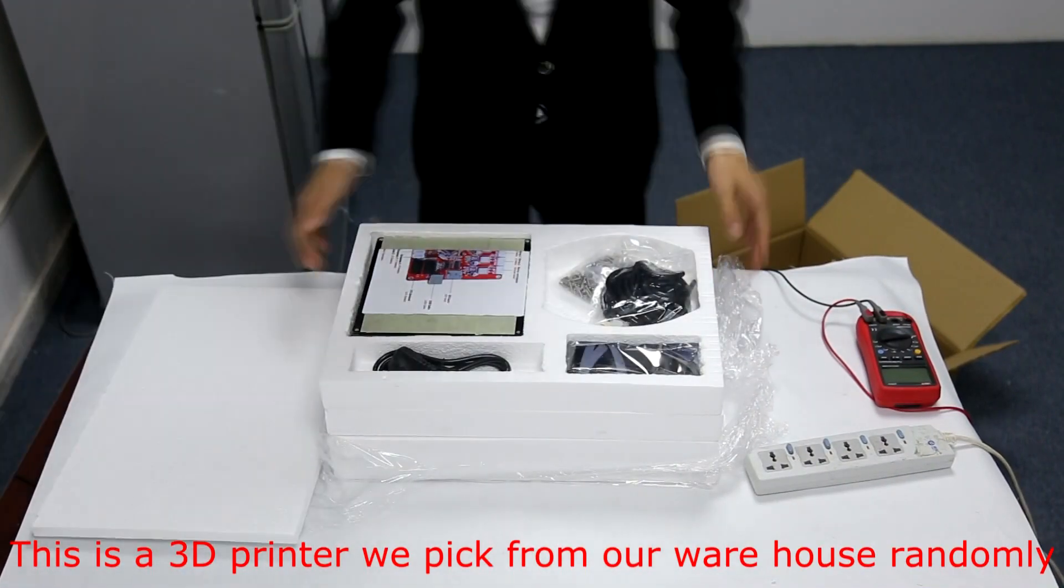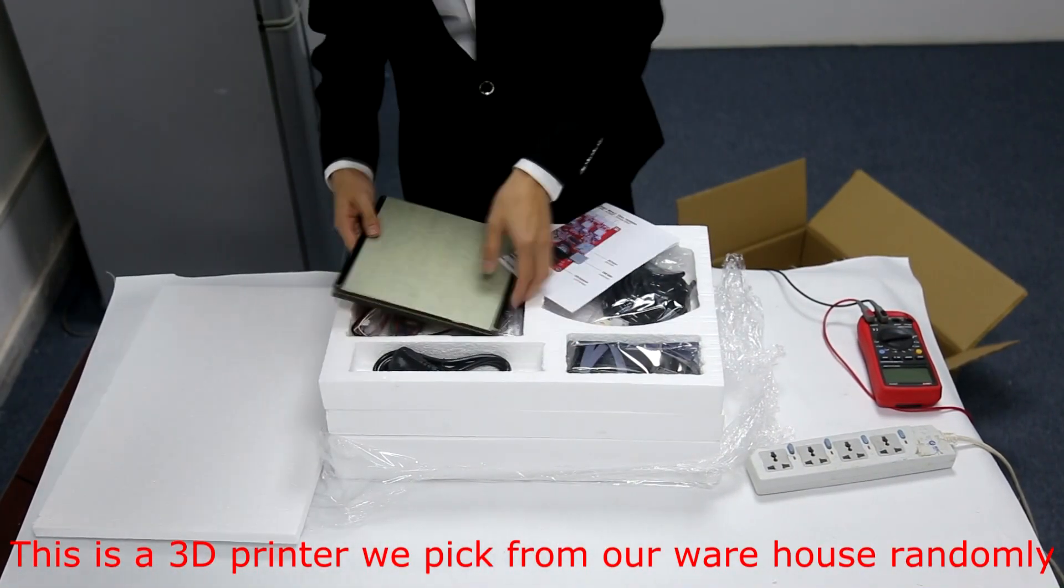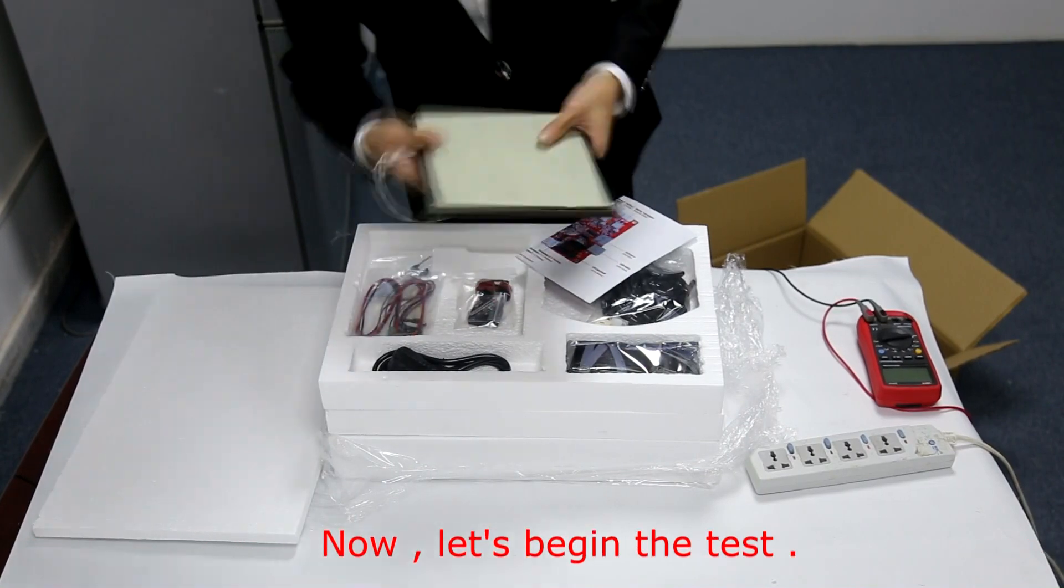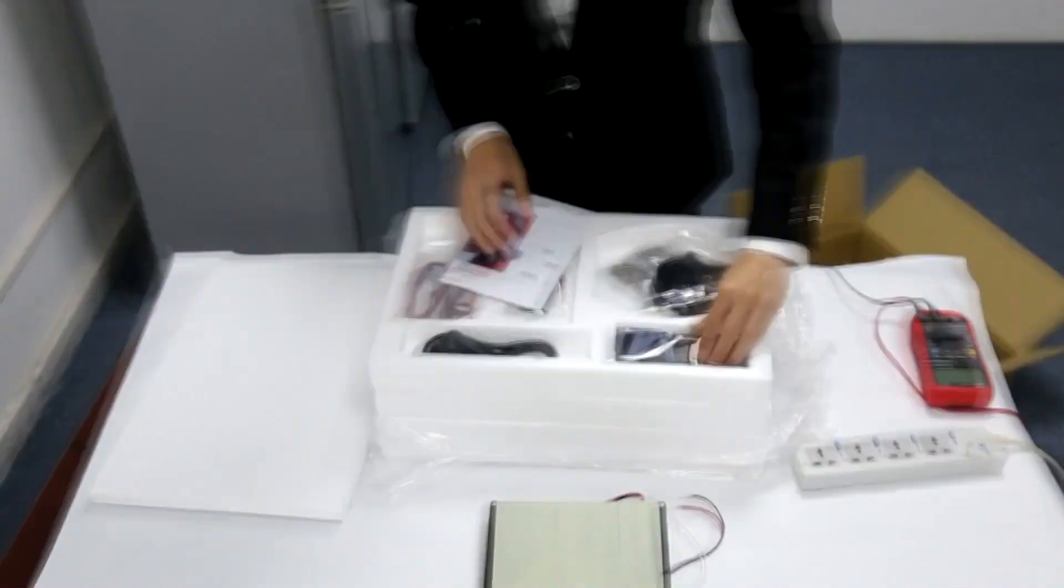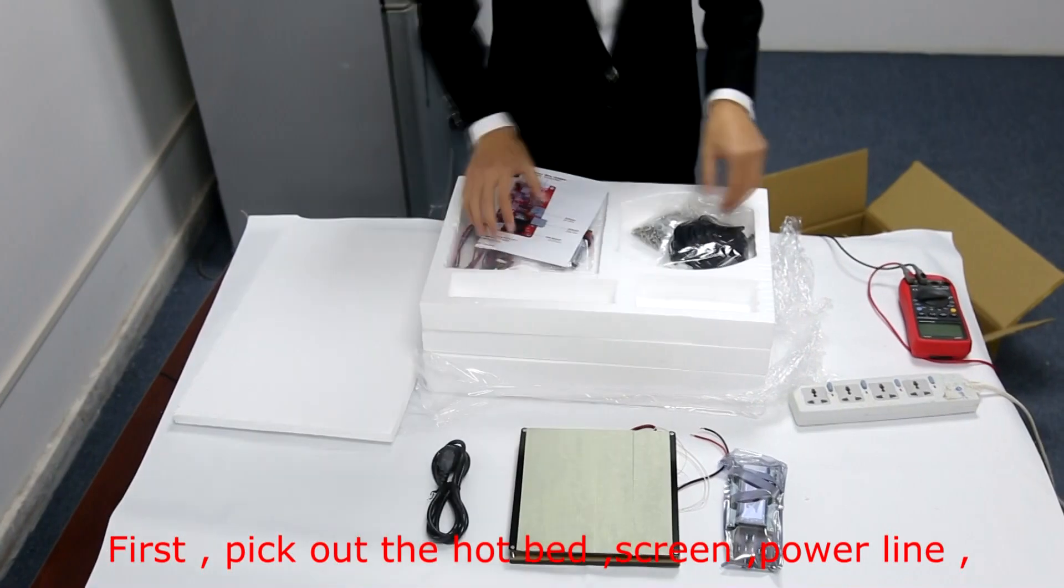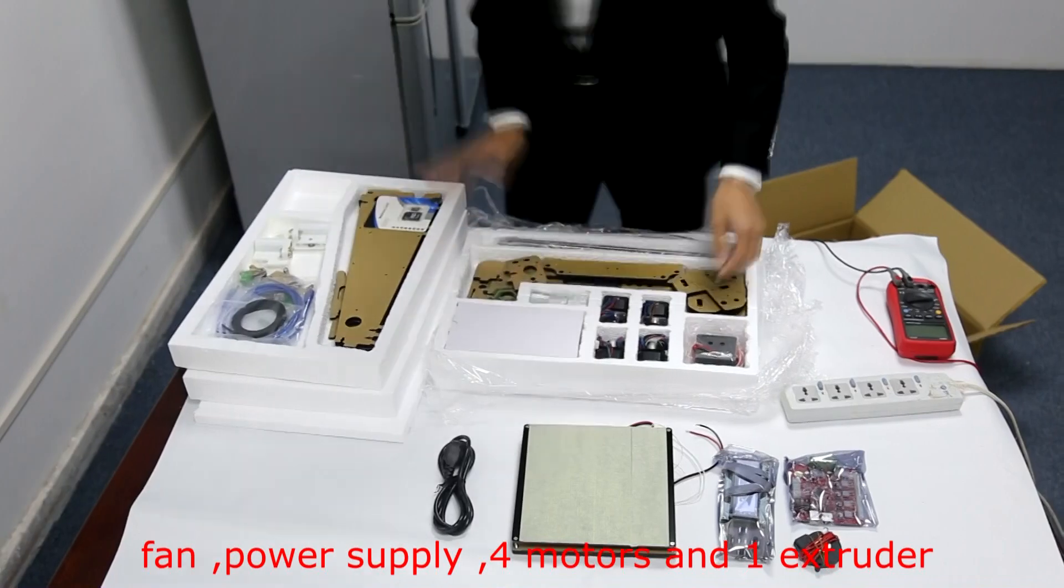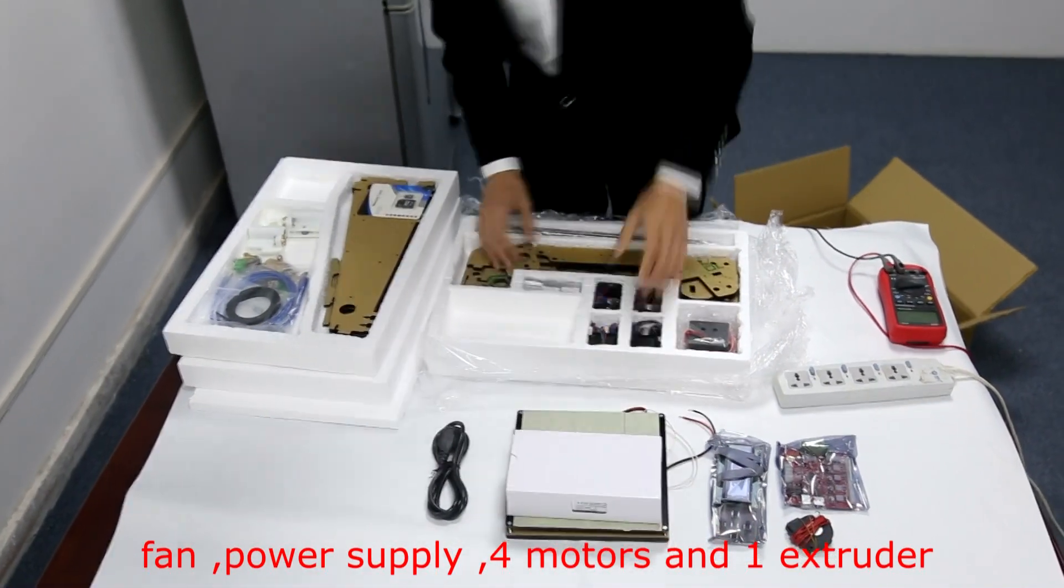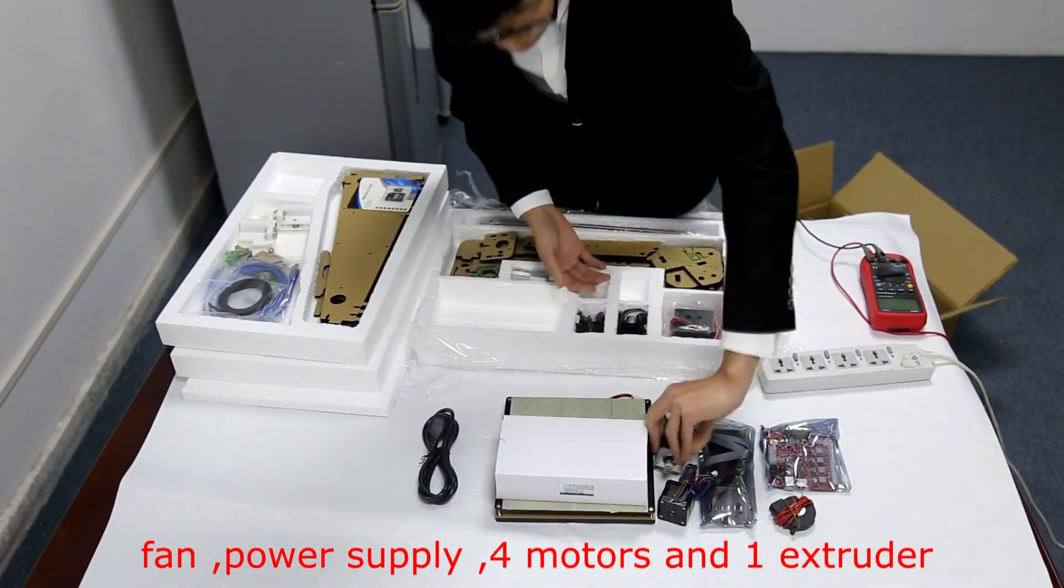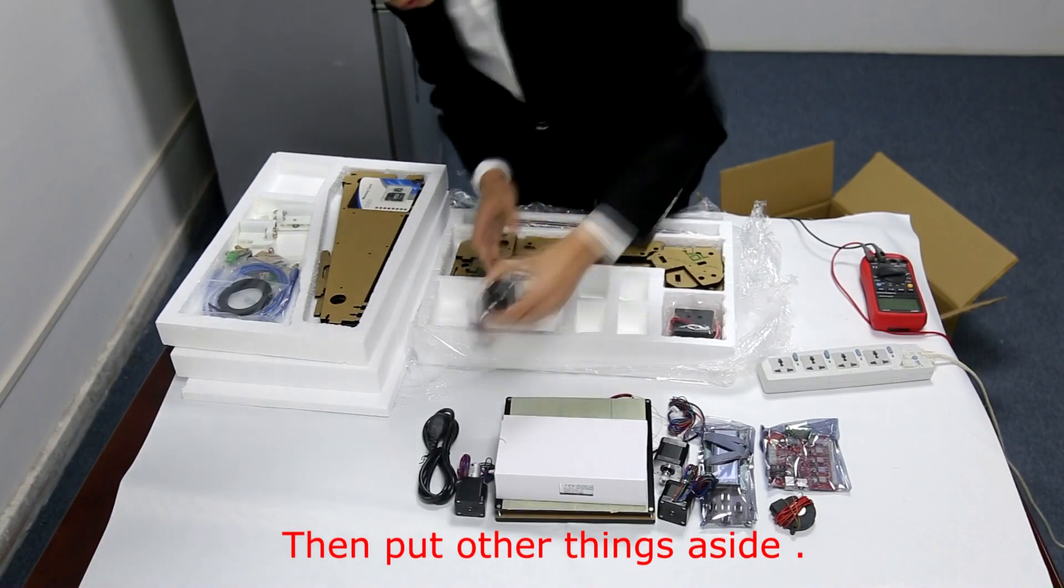This is a 3D printer we picked from our warehouse randomly. Now, let's begin the test. First, pick out the hotbed, screen, power line, mainboard, fan, power supply, four motors, and one extruder. Then, put other things aside.